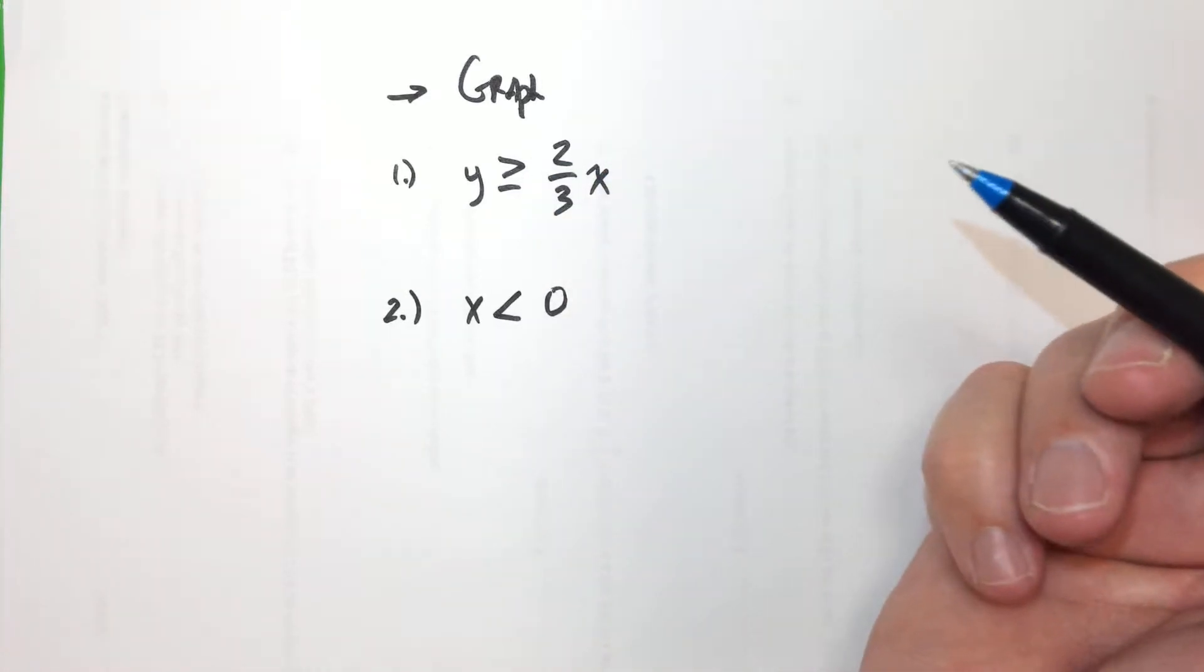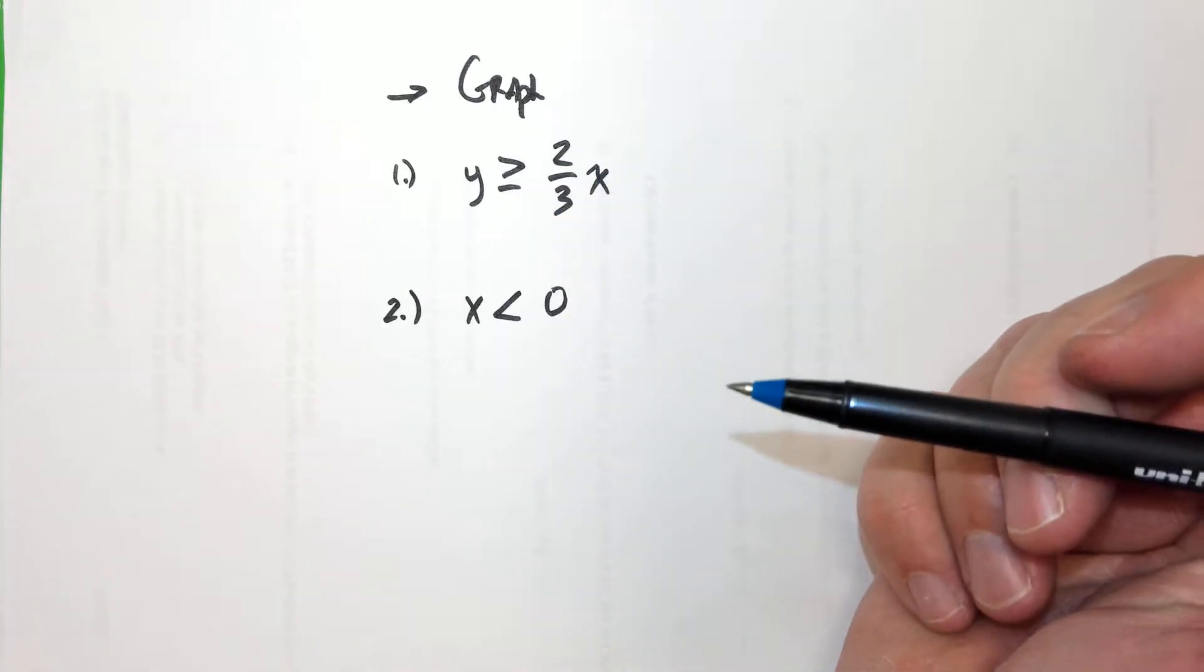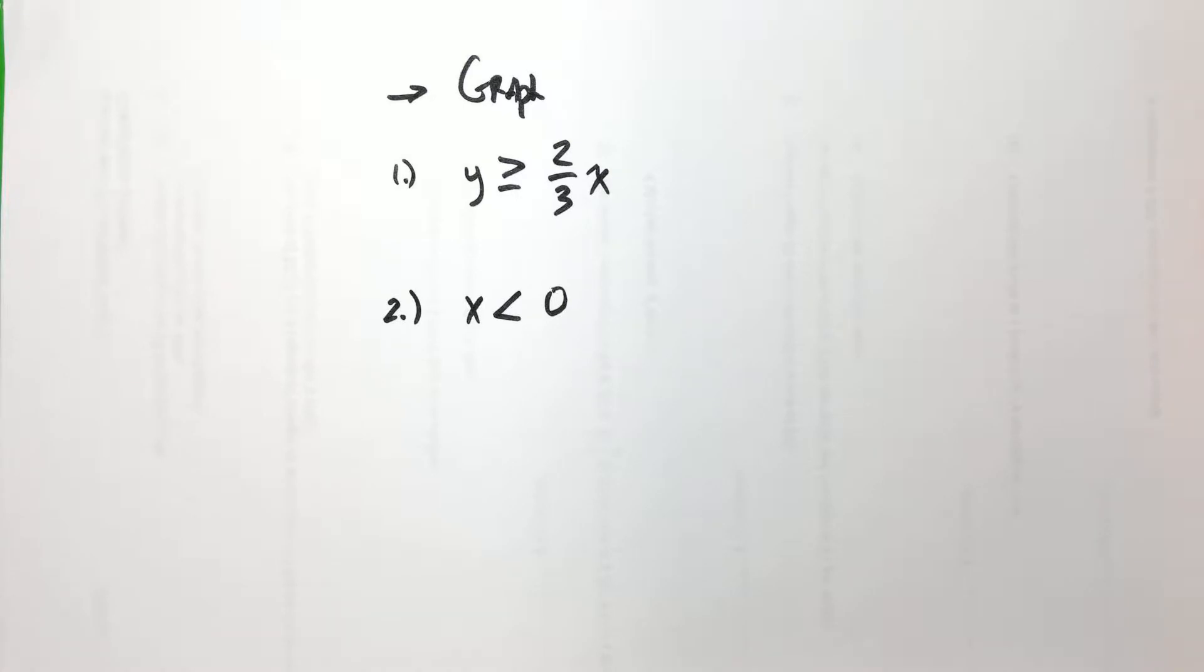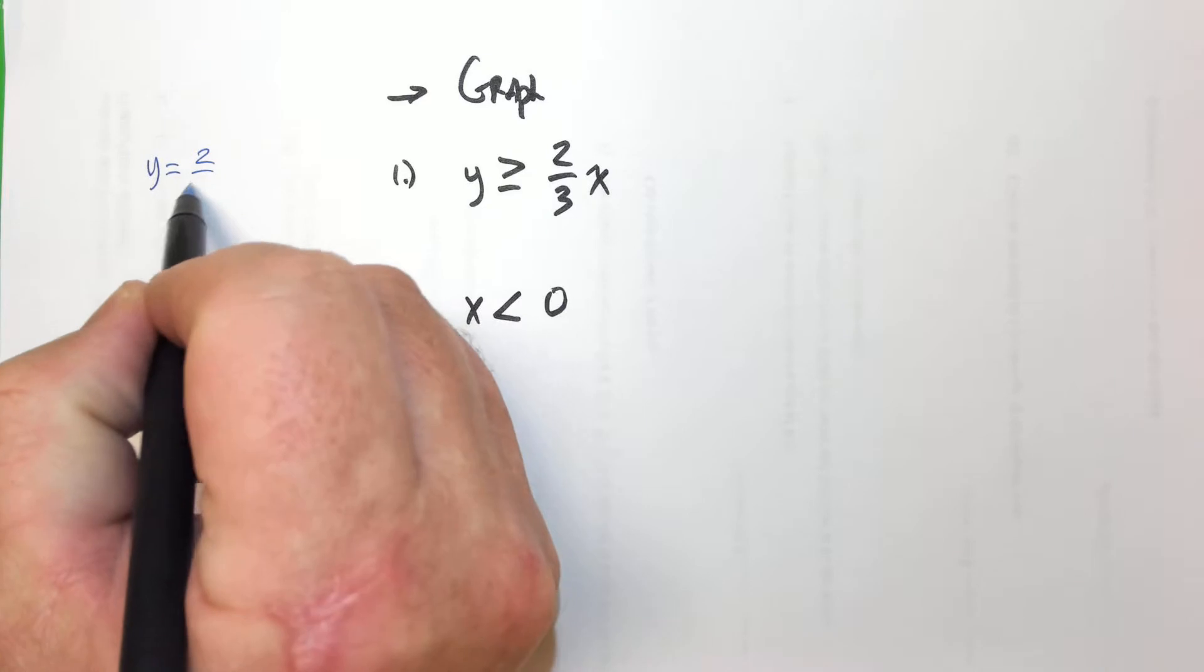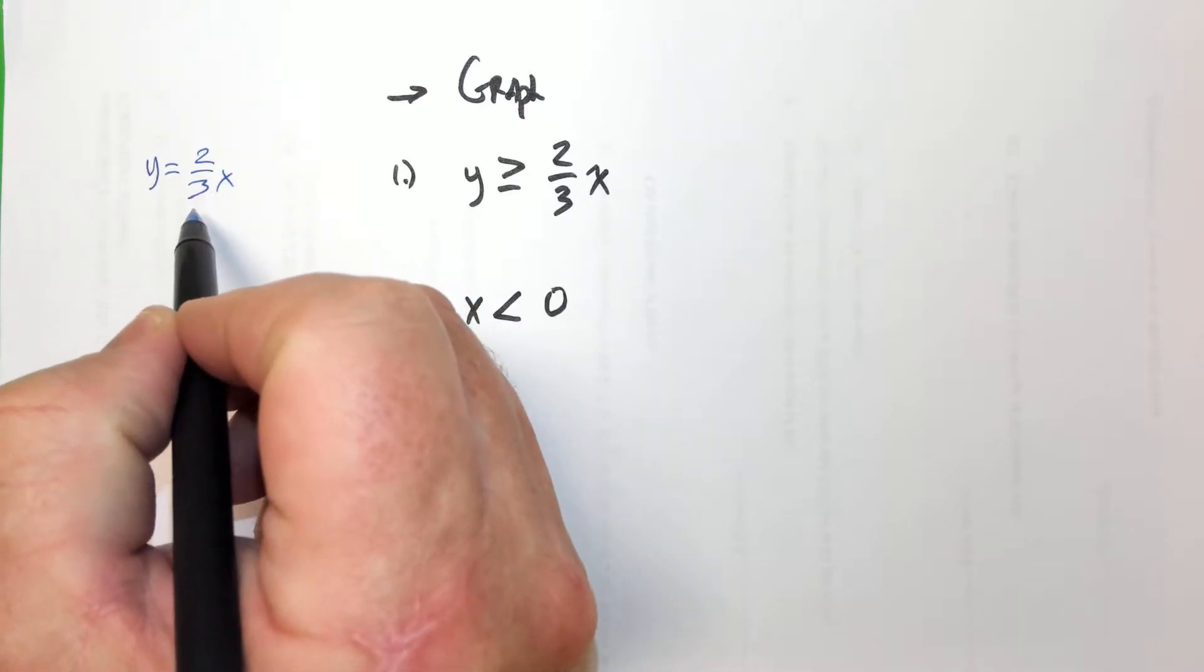A minute ago you said you never understood why we shaded. And so now I'm curious if Edgar knows why we shade with these. Yeah, why? Because it's equal to. So yeah, but why do we shade? Like you're right, if it said this, if it said, well that's supposed to be a three.